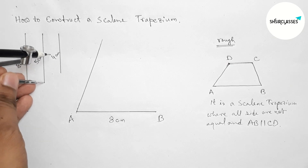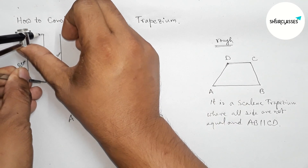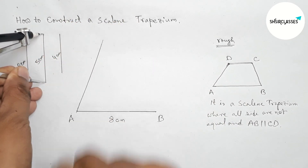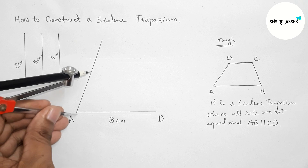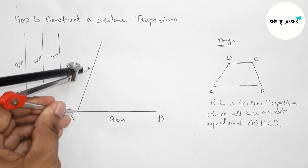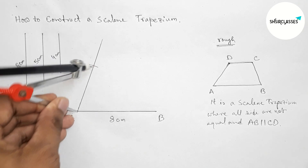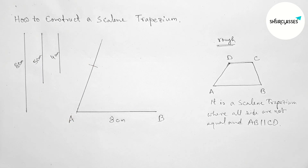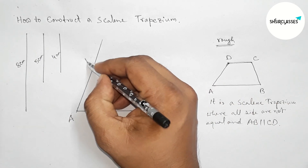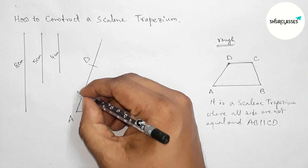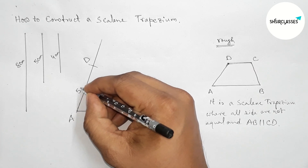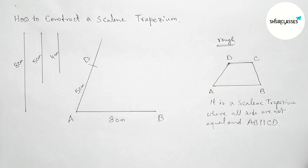Next, taking the length 5 centimeters with the help of a compass, putting the compass on point A and cutting here. Now taking point D here, so AD is 5 centimeters.